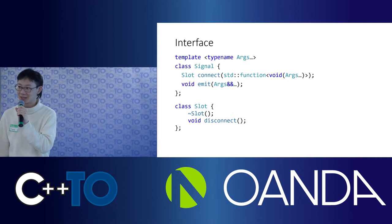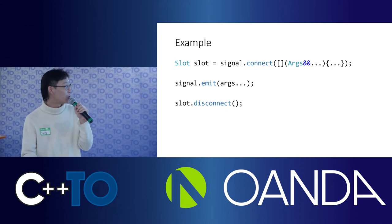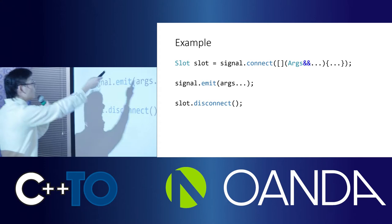Here is an example — pretty straightforward. You add a callback function into the signal, you emit it, you call it, and you remove it.